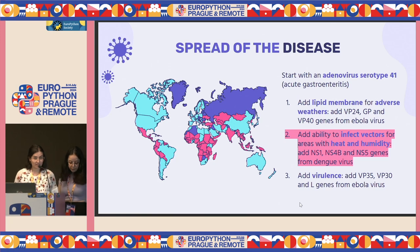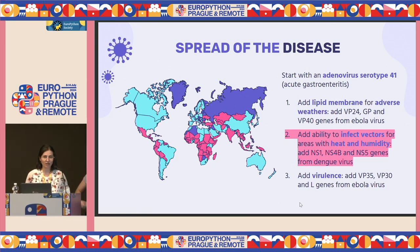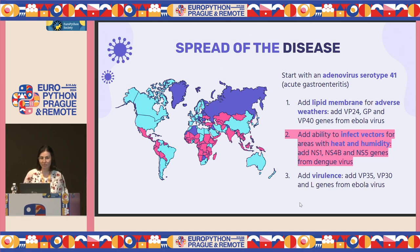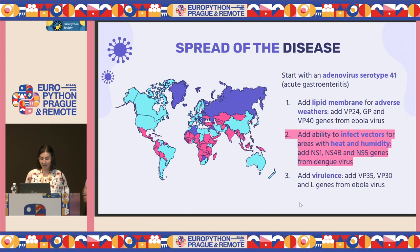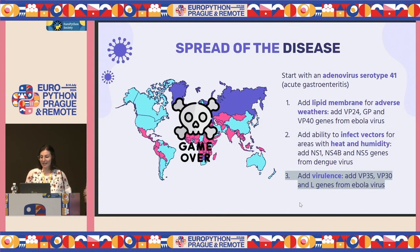With this example — which is the same process for other genes — we can add more abilities to the virus to survive in other places in the world. For example, the ability to infect via vectors like mosquitoes, which is interesting for areas with heat and humidity, highlighted in pink in the map. For this we can use genes NS1, NS4B, and NS5 from the dengue virus. And last but not least, we can add virulins from the Ebola virus to kill all humanity once and for all.